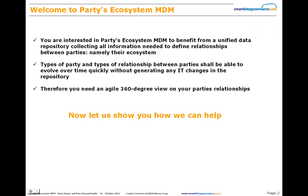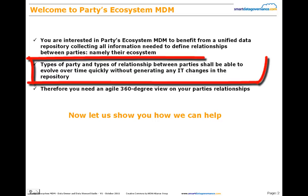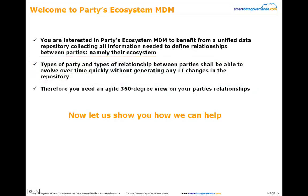The goal of the Parties Ecosystem MDM is to provide a unified data repository to collect all information about relationships between parties. Types of parties and types of relationships between parties shall be able to evolve over time without any IT operations or modifications on the data model. In one sentence, the goal is to deploy the 360-degree view on parties' relationships.